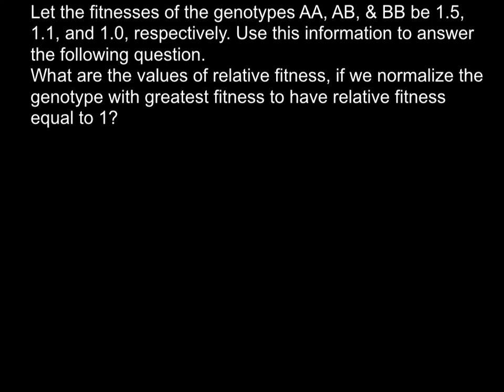When you are ready, you can run the video again and compare your answer with my answer and explanation. Today's problem: let the fitness of the genotypes AA, AB, and BB be 1.5, 1.1, and 1.0 respectively. Use this information to answer the following question: what are the values of relative fitness if we normalize the genotype with the greatest fitness to have a relative fitness equal to 1?